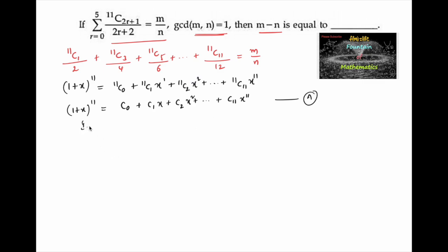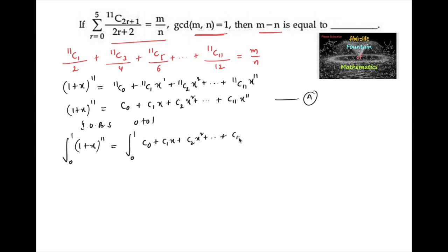Now integrating both sides with limits 0 to 1, we get the integral from 0 to 1 of (1+x)^11 equal to the integral from 0 to 1 of (C0 + C1·x + C2·x² + ... + C11·x^11)dx. The left side gives (1+x)^12 / 12 evaluated from 0 to 1.